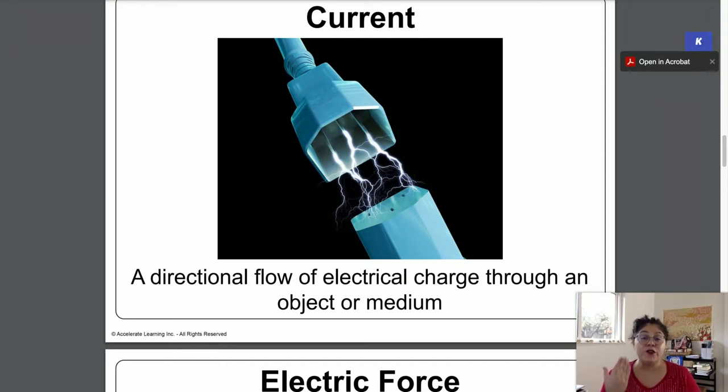A current is a directional flow of a charge through any kind of object or media. It is how you charge your telephone when you plug it in. It is how you charge a battery. It is through a current.